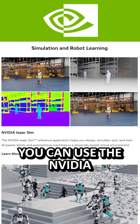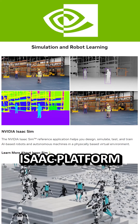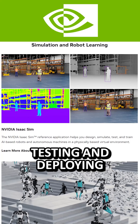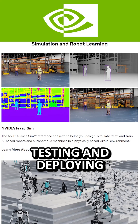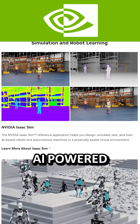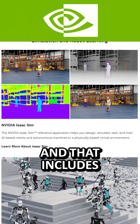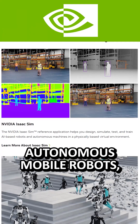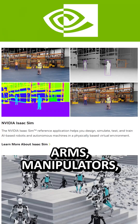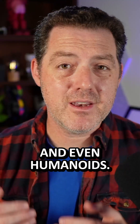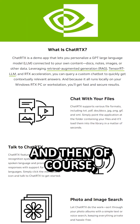Let's say you're learning to build robots. You can use the NVIDIA Isaac platform for developing, testing, and deploying AI-powered robotics applications. And that includes autonomous mobile robots, arms, manipulators, and even humanoids.